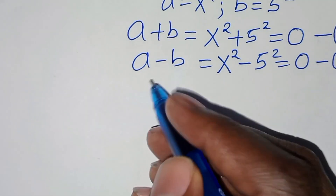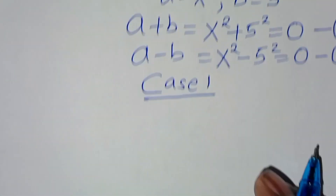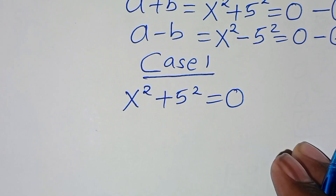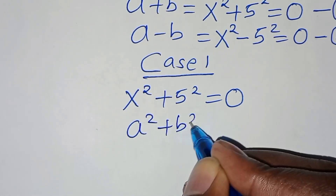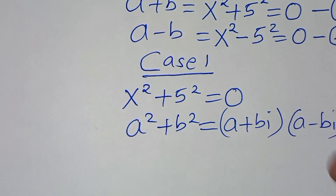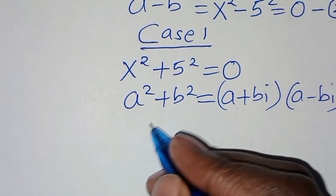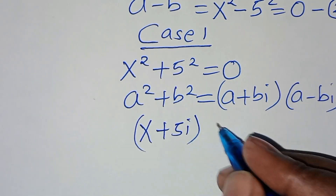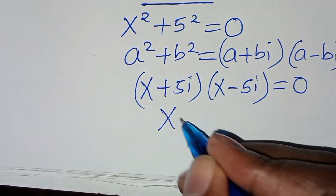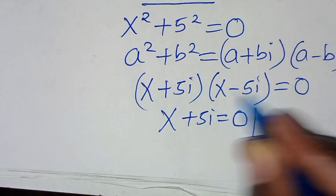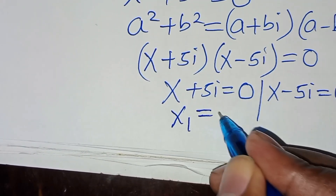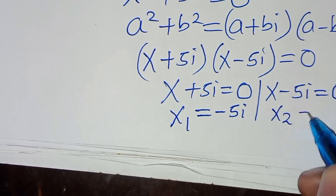For case 1, we have x to the power 2 plus 5 to the power 2 equal to 0. This is in the form a squared plus b squared, which we can express as (a + bi)(a − bi). So we have x plus 5i times x minus 5i equal to 0. This implies x₁ equals negative 5i, and x₂ equals 5i.